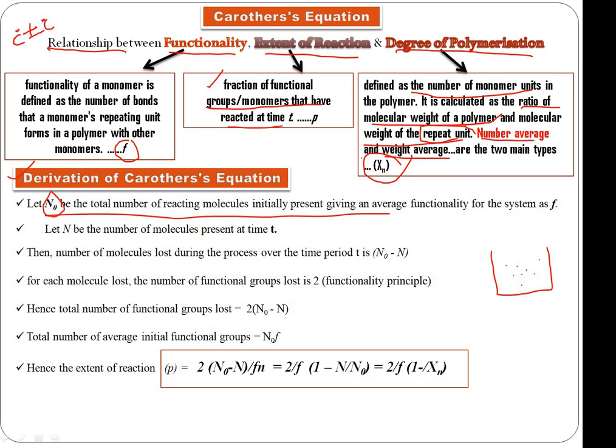Let's say N₀ or N zero is the total number of reacting molecules initially present. The average functionality of the system is f. Now let N be the number of molecules present after time t. After time t, these molecules have reacted, and N molecules remain unreacted. So the number of molecules reacted is N₀ minus N.